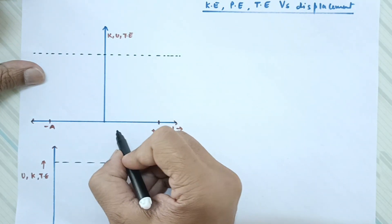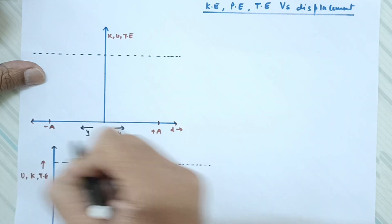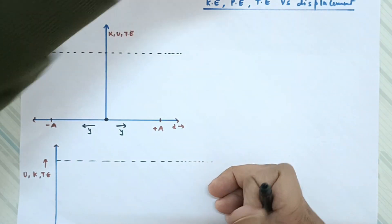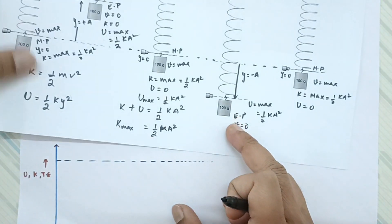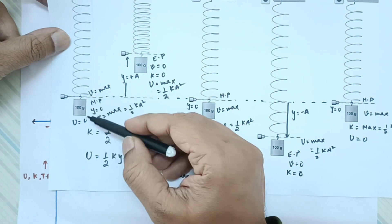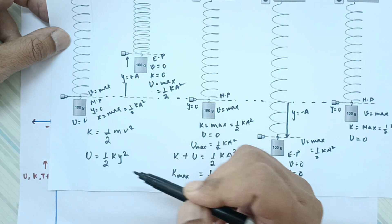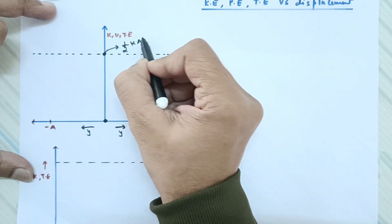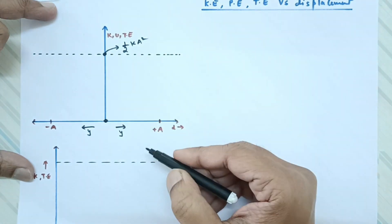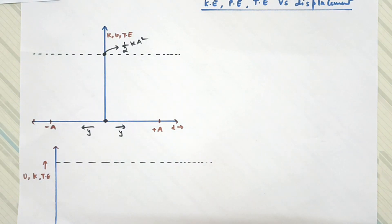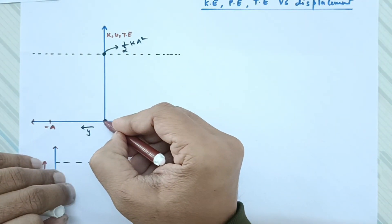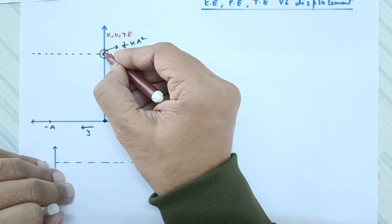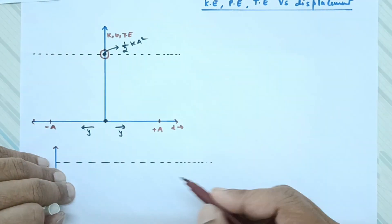Displacement is taken along the x-axis. Displacement is zero at mean position, positive on one side, and negative on the other. At mean position where displacement is zero, kinetic energy is maximum and potential energy is zero. This maximum energy corresponds to half k a square — the graph cannot go beyond that because total energy cannot exceed half k a square. So at y equals zero, energy is maximum. All three mean positions are covered at this point.